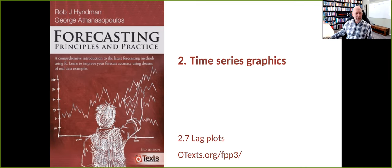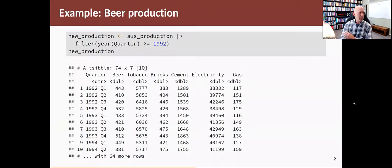I'm going to take some data from the Oz production data set. Here we have some code which takes the Oz production data set and filters out all of the data since 1992. We just compute the year corresponding to that quarter and make sure that's greater than or equal to 1992.